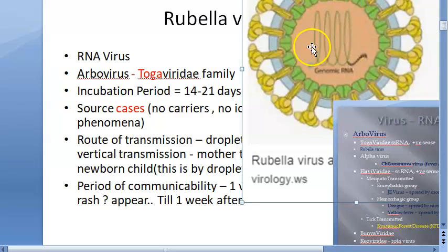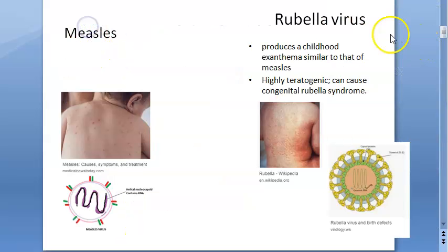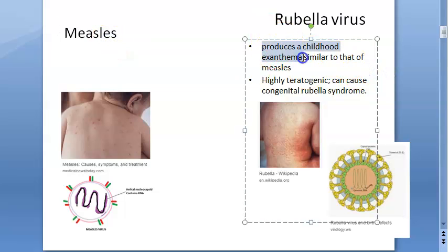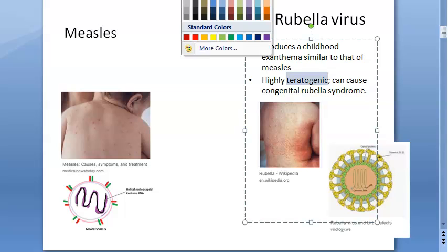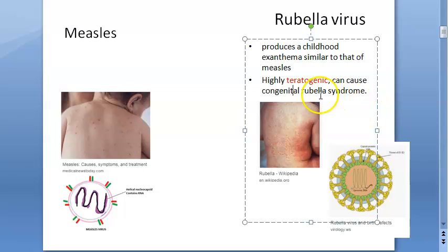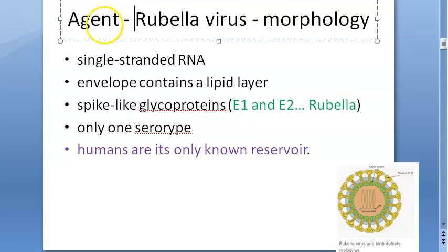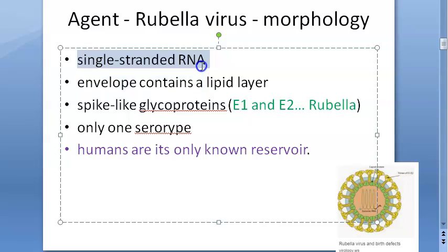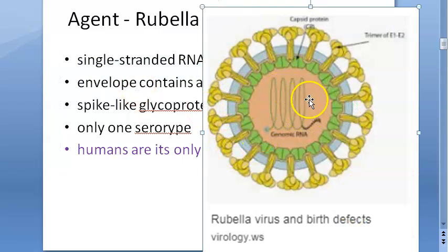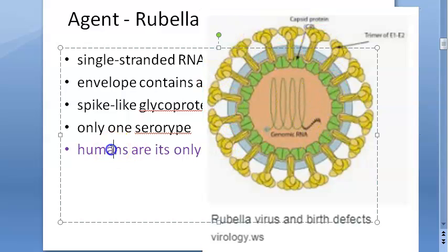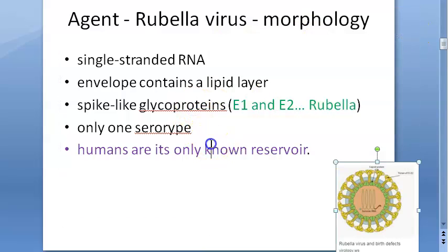Rubella produces an exanthema similar to measles, but the key problem is its teratogenicity — a pregnant woman who gets it can transmit congenital anomalies to the fetus, leading to congenital rubella syndrome. The agent, rubella virus, is a single-stranded RNA virus with a lipid envelope and spike-like glycoproteins E1 and E2. It has only one serotype, and humans are the only known reservoir.